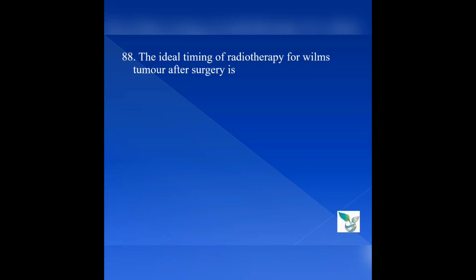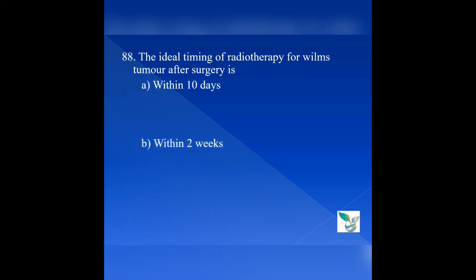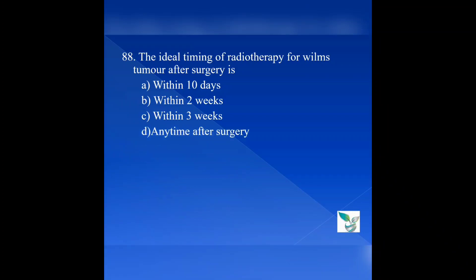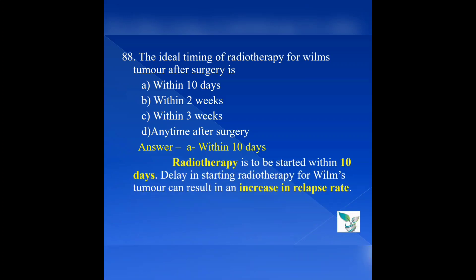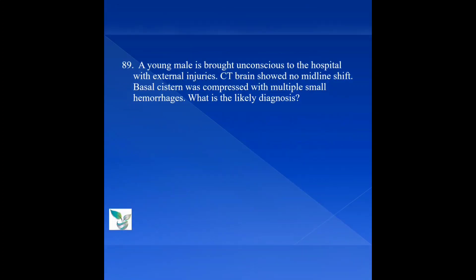Question number 88: The ideal timing of radiotherapy for Wilms tumour after surgery is — Option A: within 10 days. Option B: within 2 weeks. Option C: within 3 weeks. Option D: any time after surgery. The answer is option A, within 10 days. Radiotherapy is to be started within 10 days, as delay in starting radiotherapy for Wilms tumour can result in an increase in relapse rate, meaning recurrence.